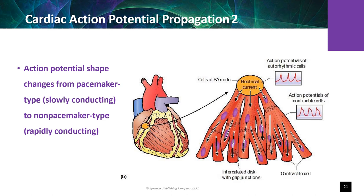Calcium channel blocking drugs like amlodipine block L-type calcium channels in vascular smooth muscle cells, causing a decrease in arteriolar tone and vascular resistance, and may be used in the treatment of hypertension. The cardio-selective calcium channel blocker verapamil blocks L-type calcium channels in cardiac muscle cells and may be beneficial in arrhythmias by lowering heart rate and AV nodal conduction speed, but will decrease cardiac contractility and therefore needs to be used cautiously.